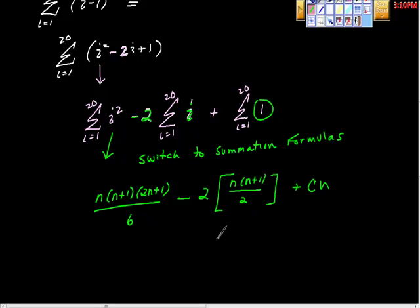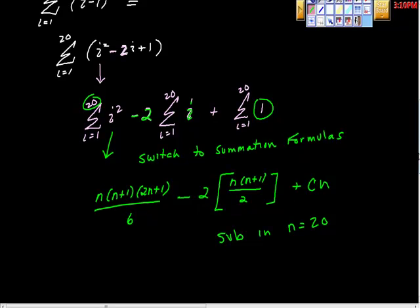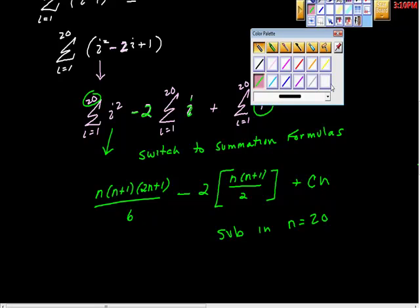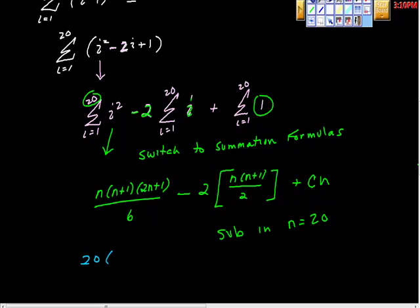Now I'm going to sub in n equals 20 because n equals 20. So I just took this value here, and here I got 20, so 20, 20 plus 1 is 21, so 2 times 20 plus 1 is 41, 41 all over 6.